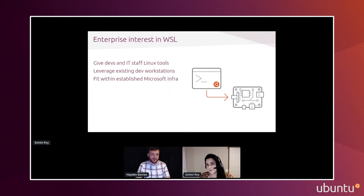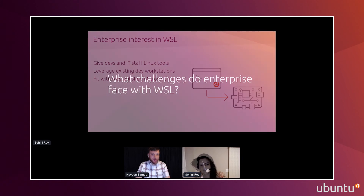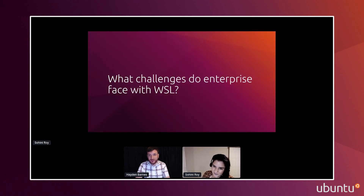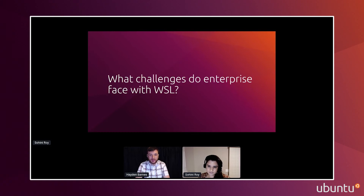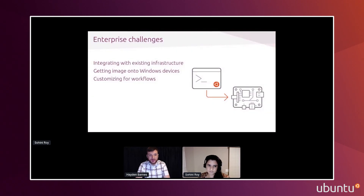Now let's talk through some of the challenges for WSL specifically in the enterprise and how we can solve them. WSL fulfills many meaningful use cases for developers and IT staff and opens the door to Linux on Windows. There are three primary challenges: first, integrating with existing infrastructure such as authentication, VPN, and network file shares; second, actually getting the WSL image onto Windows devices and managing that environment; and third, creating custom images — customizing the WSL image being deployed for specific enterprise needs.